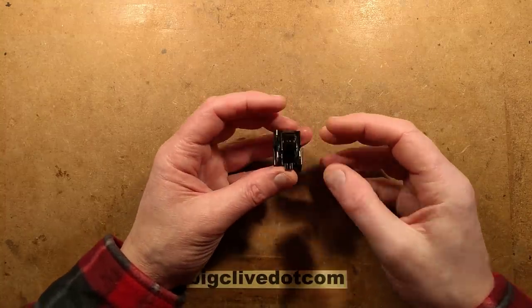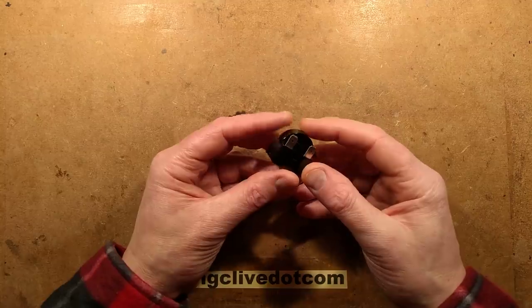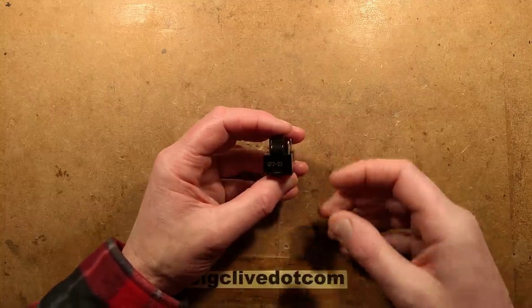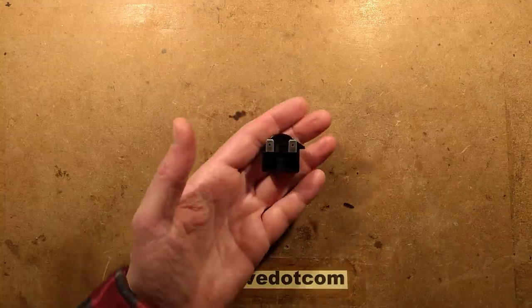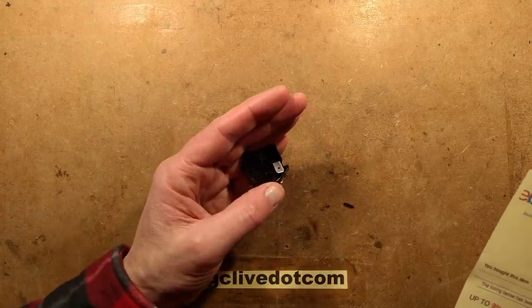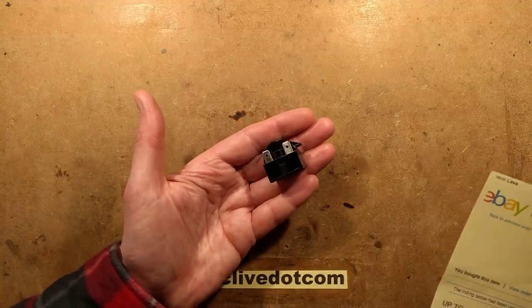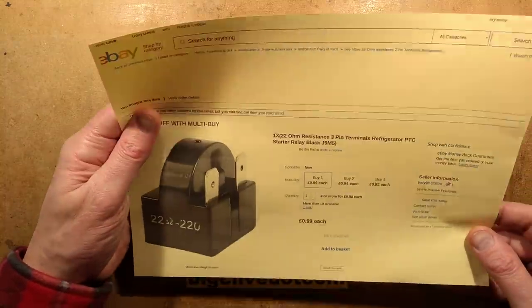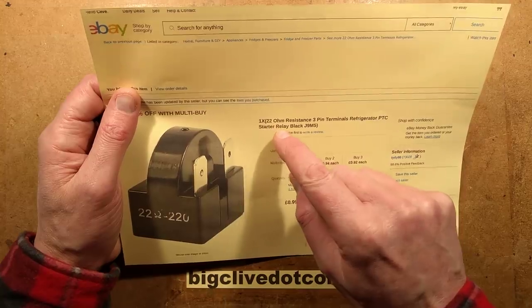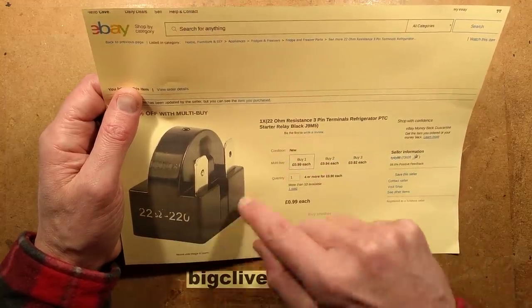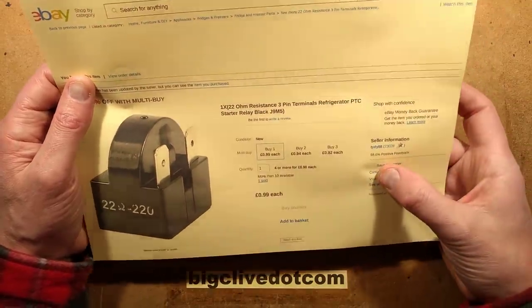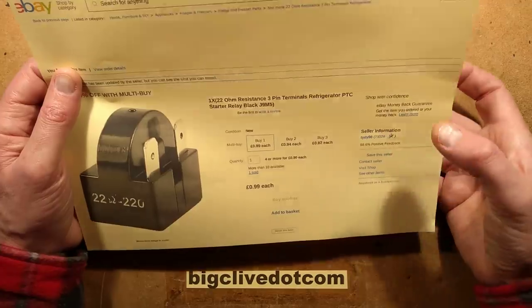Another interesting find on eBay. This is a very standard component - your fridge may have one in it. But because it's mass produced for consumer products, it's dirt cheap. This one cost 99p, which is buttons for what it does.